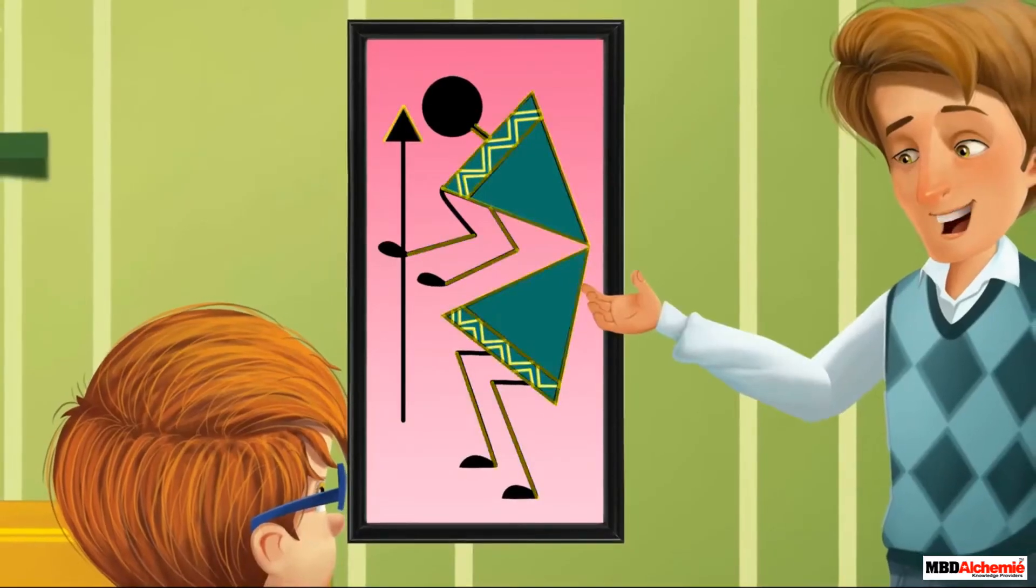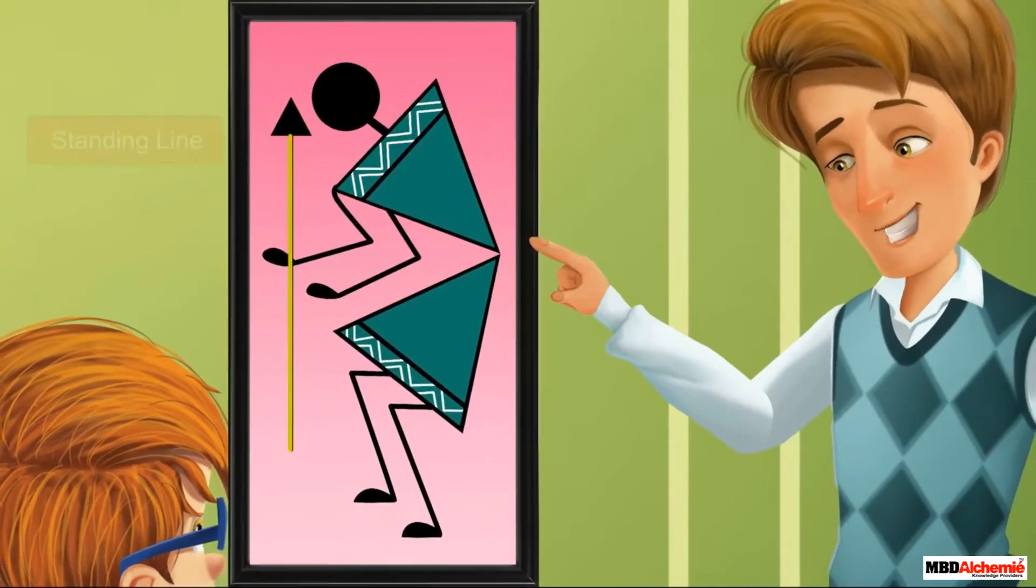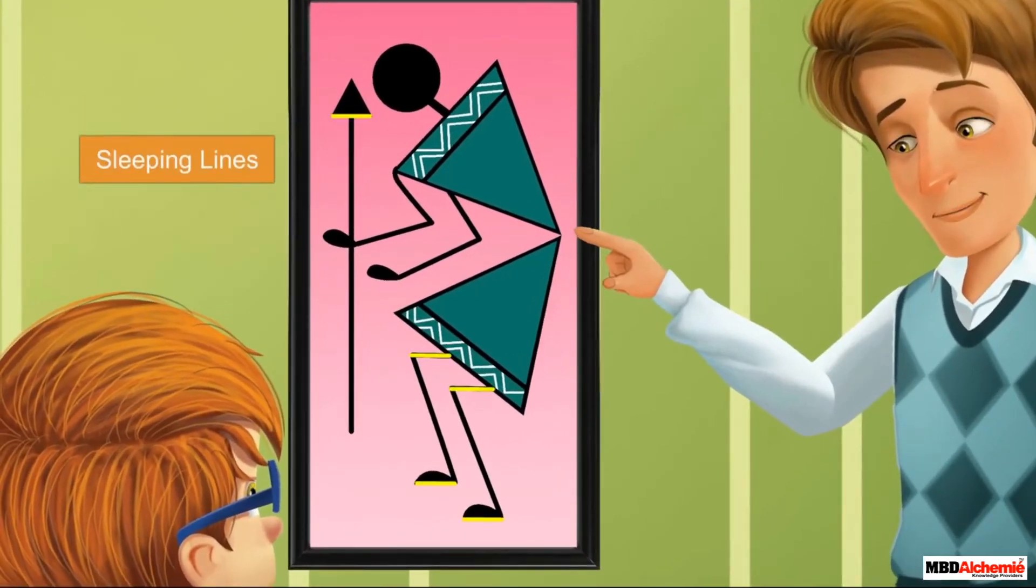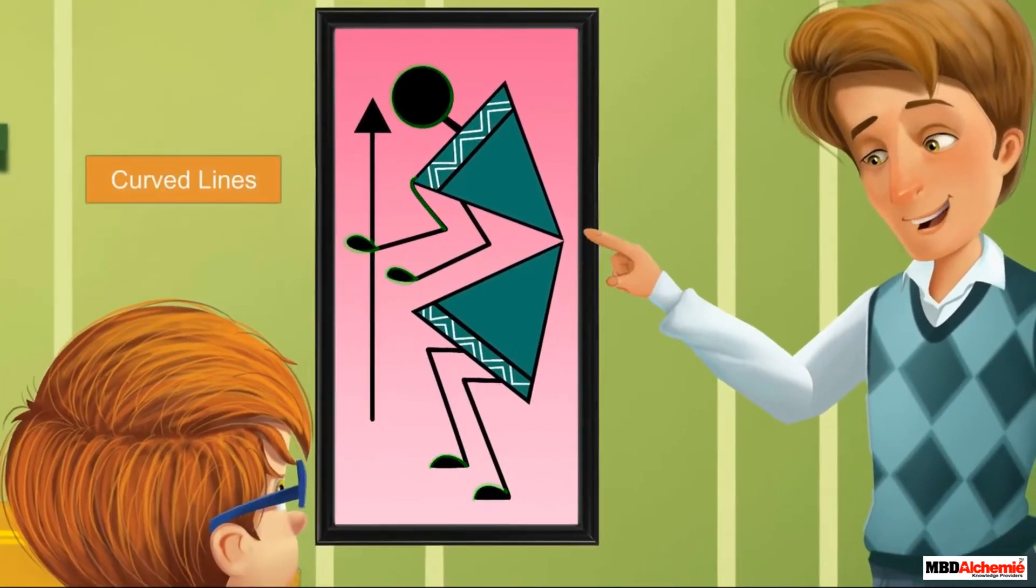These are slanting lines. This is a standing line. These are sleeping lines. These are curved lines.